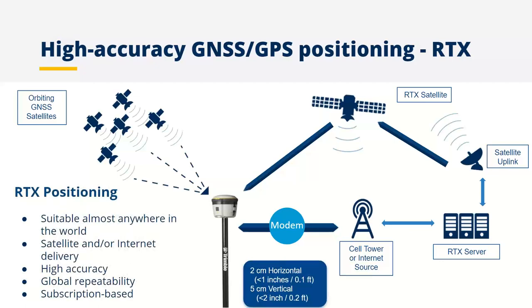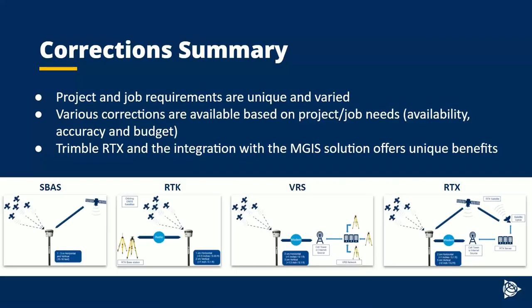The benefits of RTX are that it is ubiquitously available almost anywhere in the world, with both satellite and internet delivery available. It is high accuracy and globally repeatable. Similar to VRS, this is subscription-based. I've now covered the main types of corrections available for high accuracy positioning. Each project has different requirements, and there are several correction types to choose from based on your needs, budget, and required accuracy. Now I'm going to deep dive into Trimble RTX and how it integrates into the mapping and GIS solution.